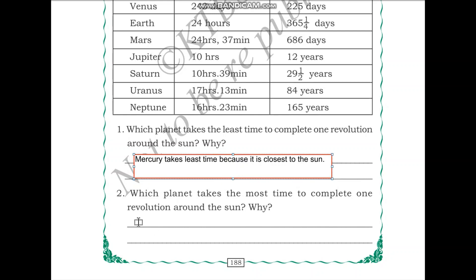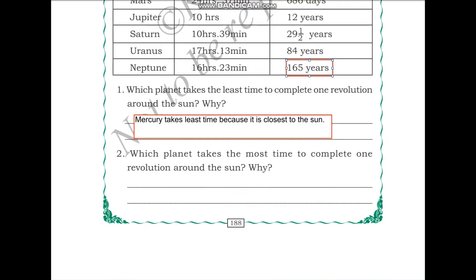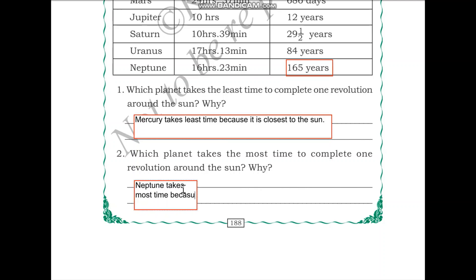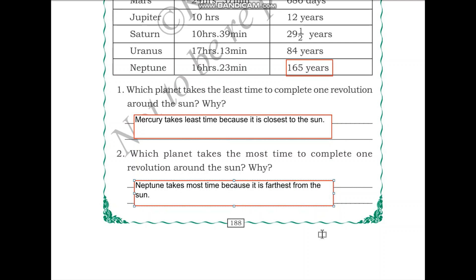Which planet takes the most time to complete one revolution around the Sun? You can see that Neptune takes 165 years to complete one revolution. So Neptune takes the longest time to complete one revolution because it is farthest from the Sun. Because it is so far away, its orbit size is very large when compared to the other planets. That is why Neptune takes the most time to complete one revolution.